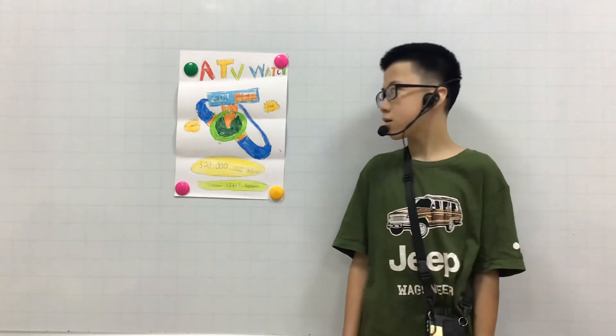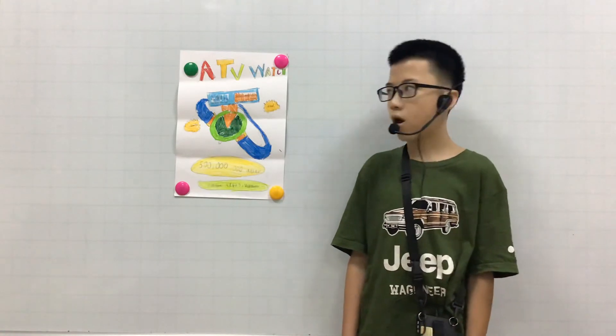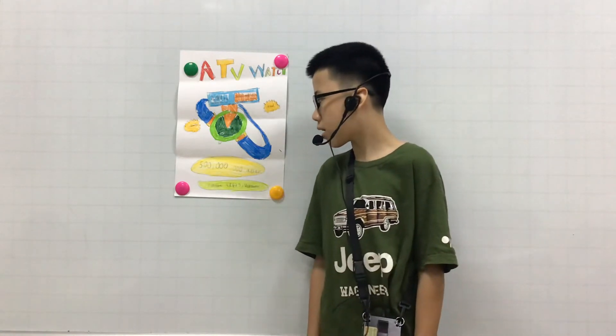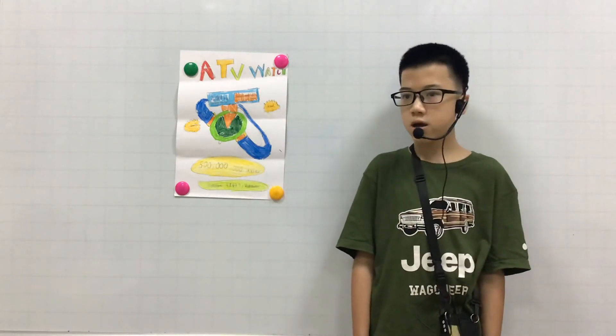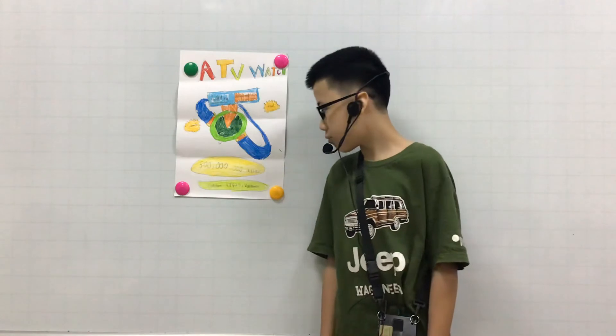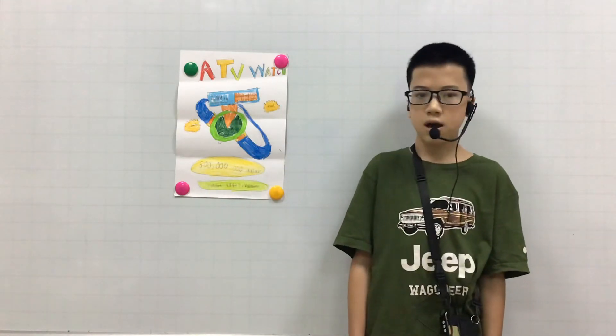The TV watch is very useful in your life because it makes your life faster. The price of the TV watch is $500 million. And we can buy it at 948679 in the Netherlands in Vietnam.